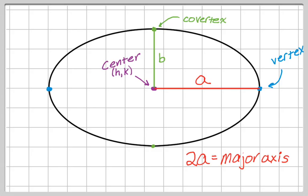So we can move up b, we move down b, and 2b is going to be called the minor axis. So we have a minor axis.